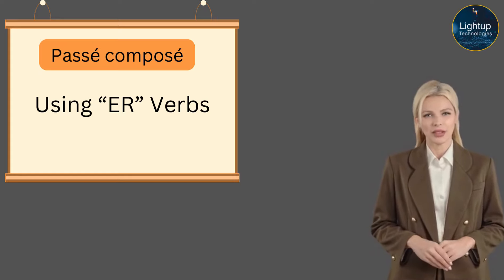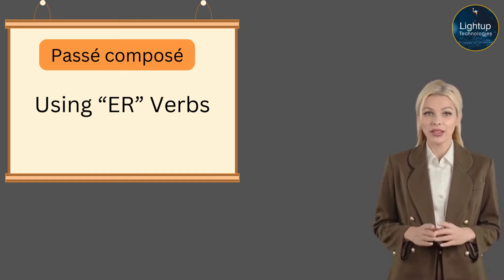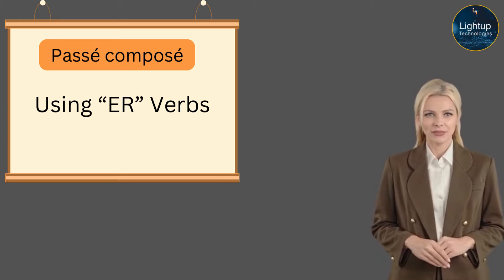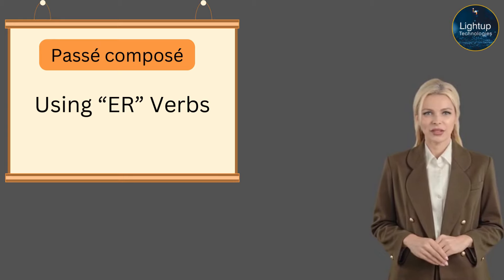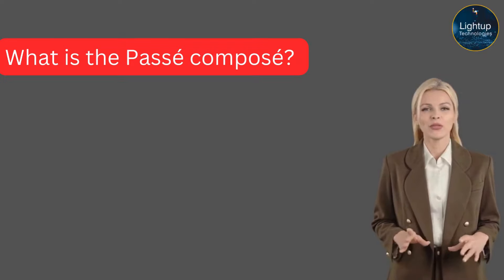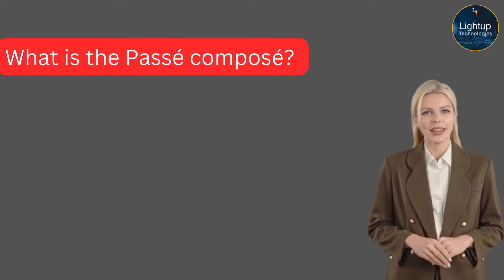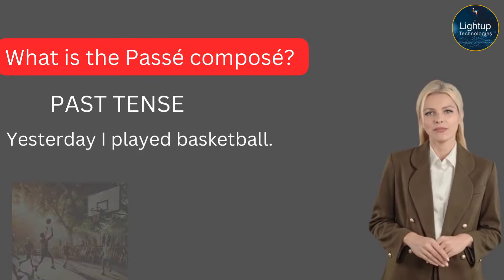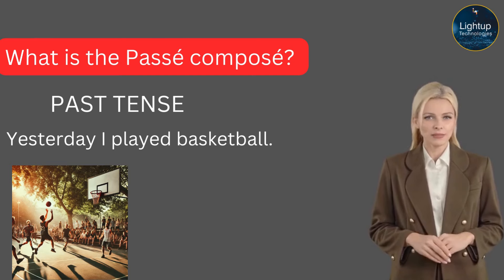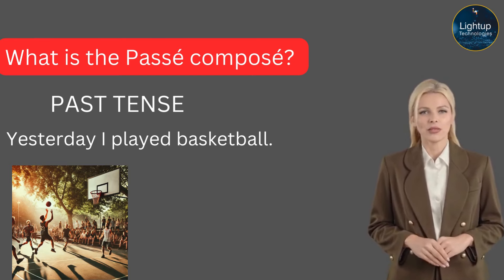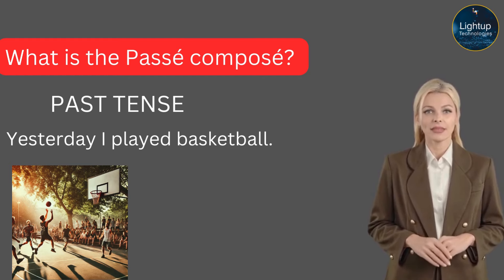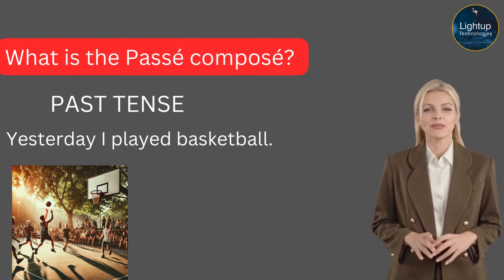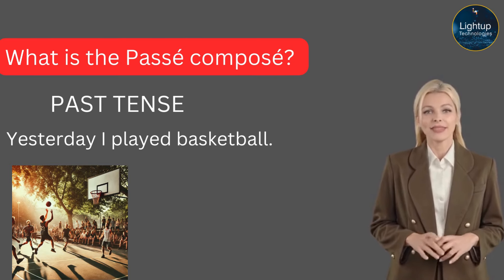Before we start, I would like to teach you a little bit about how to conjugate in past tense in French. What is the passé composé and how do we form it? Passé composé is a tense for an action that took place in the past and it's done, gone, over with. For example: Yesterday, I played basketball. That action took place yesterday and it's gone, done, over with.